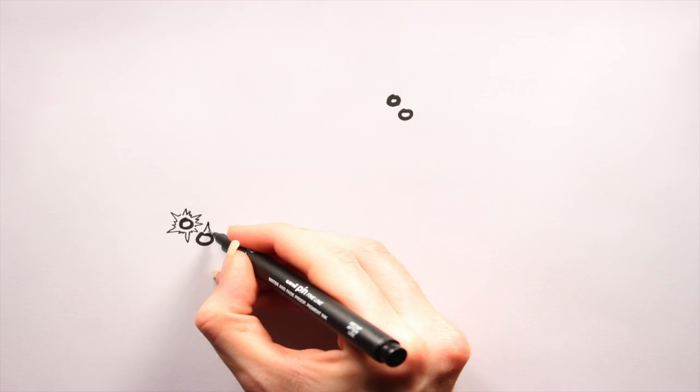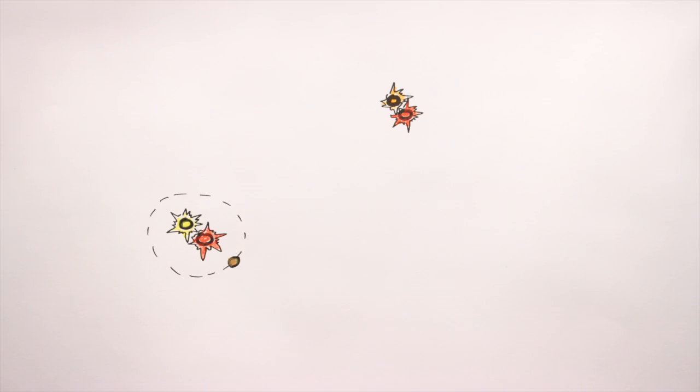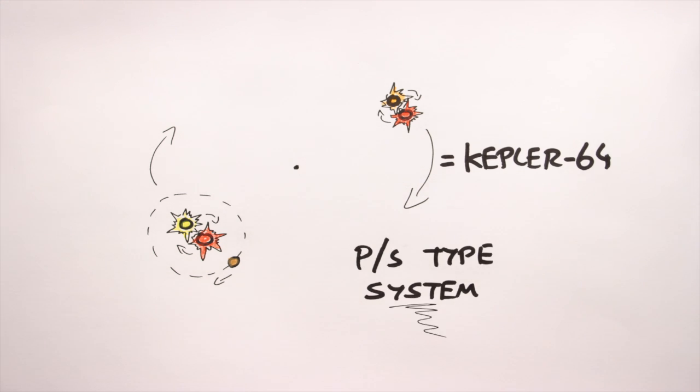I'll leave you with this beauty, the incredible PH-1 system. It's not a binary system, but rather a quaternary system. Yup, that's right, four stars in two pairs in this behemoth. And if that wasn't amazing enough, a single Neptune-sized planet orbits one of these pairs. So PH-1 is kind of like a super-hybrid system, displaying both S and P-type qualities.